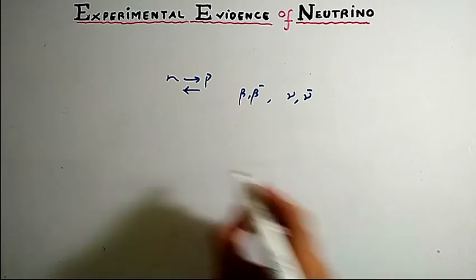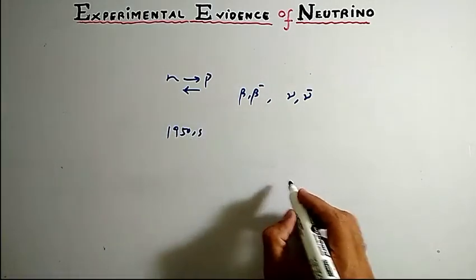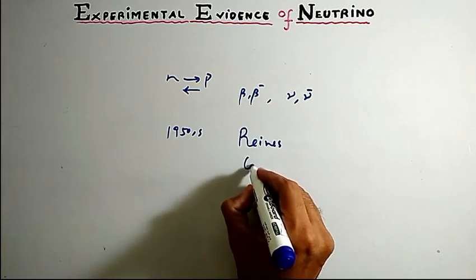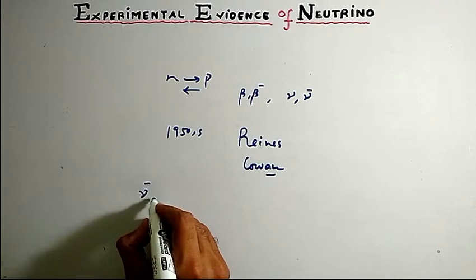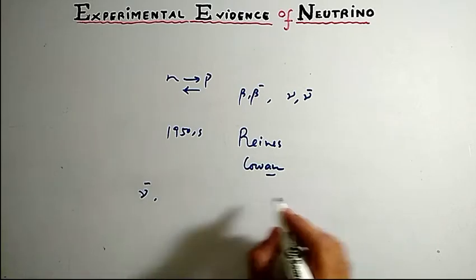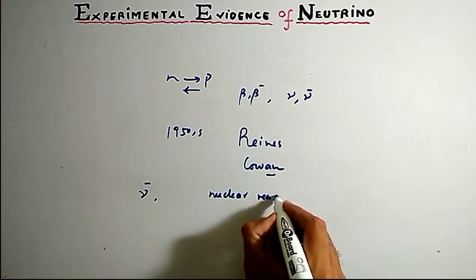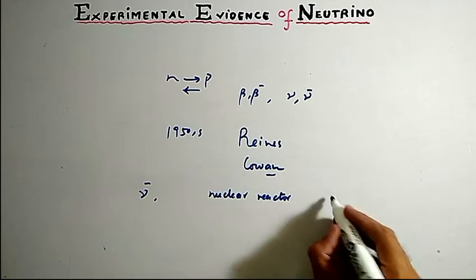The experimental detection of the neutrino was done in 1950s by two scientists, Reines and Cowan. For source of neutrino they used a nuclear reactor, and for detection of neutrino they used liquid scintillator detectors.